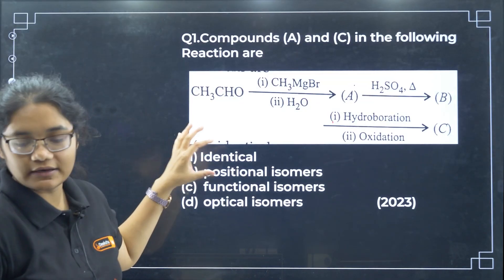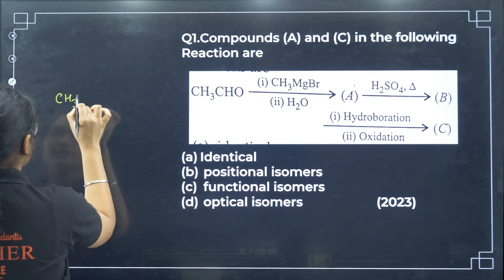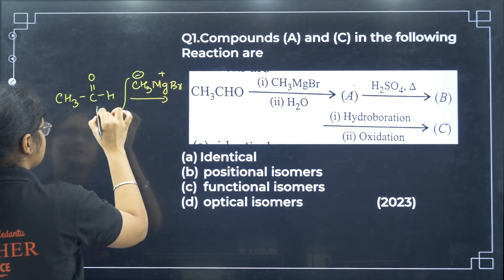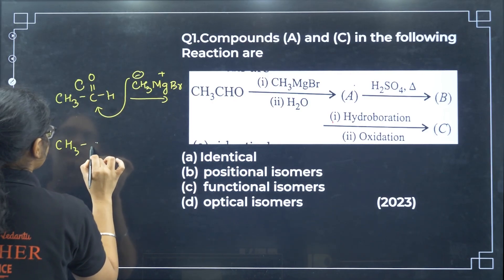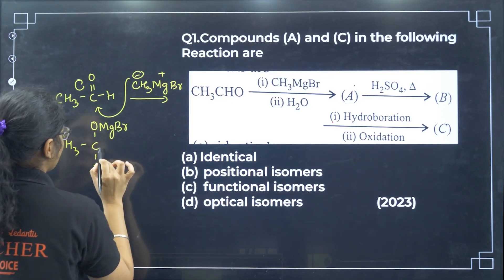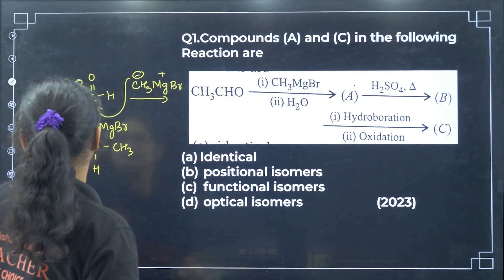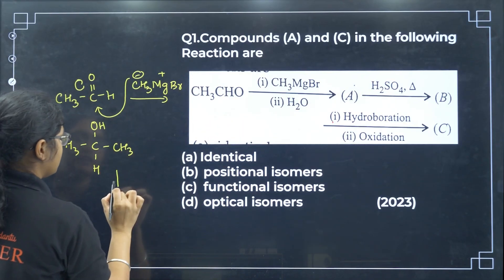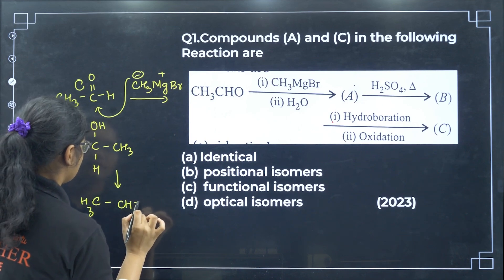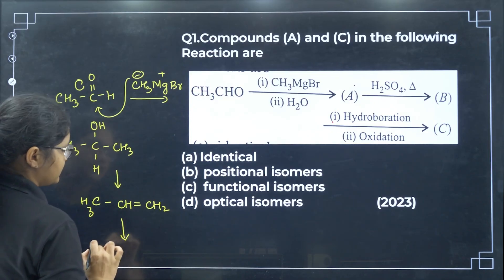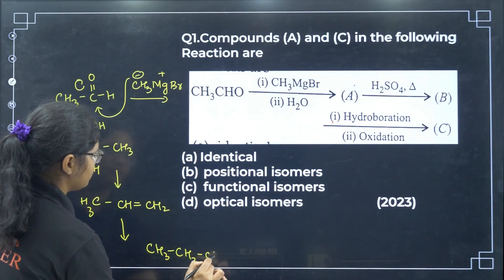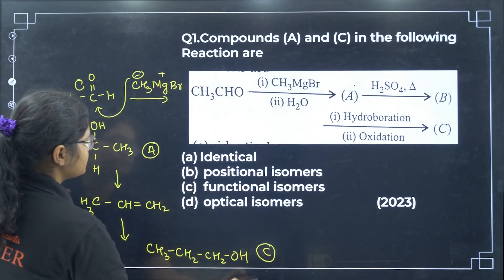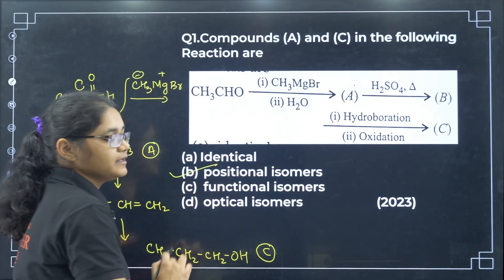Compound A and C in the following reaction: we have CH3C double bond O, then CH3MgBr. The minus attacks, giving CH3COMgBr. Then with H and CH3, when treated with water, the MgBr converts to OH. Next, with H2SO4 and heating, dehydration gives CH3CH double bond CH2. After hydroboration-oxidation, anti-Markovnikov rule applies giving CH3CH2CH2OH. So A and C are positional isomers — option B is correct.